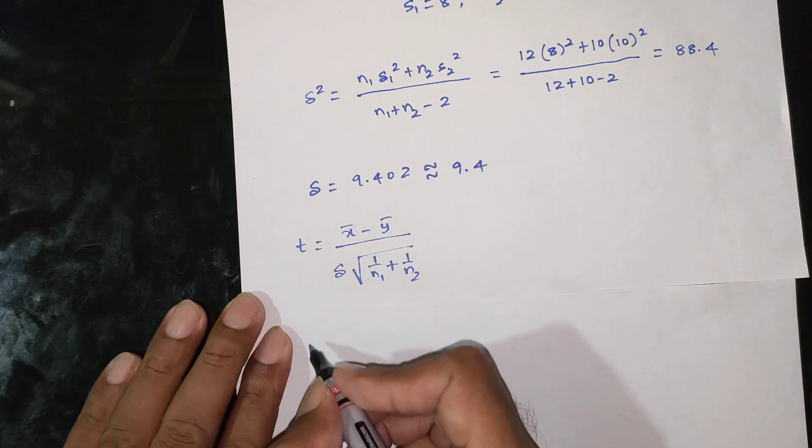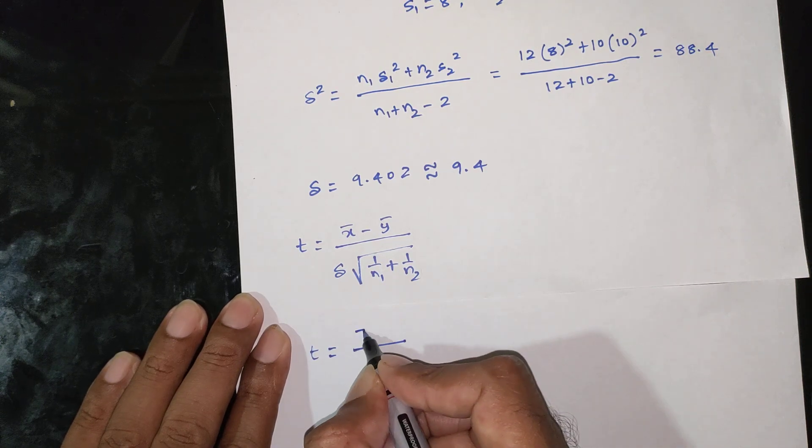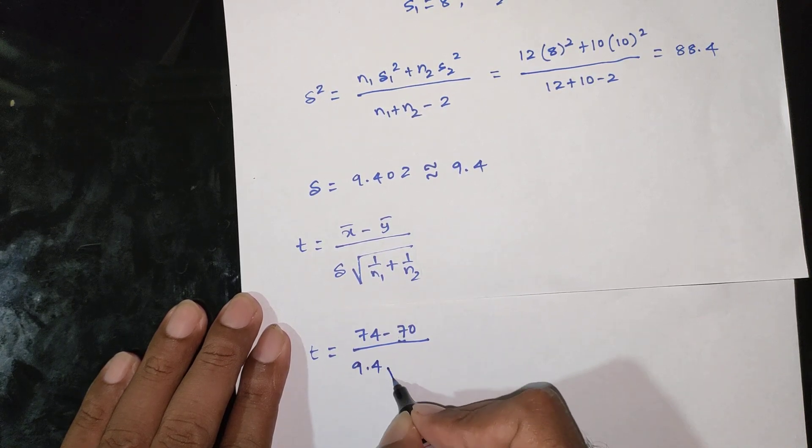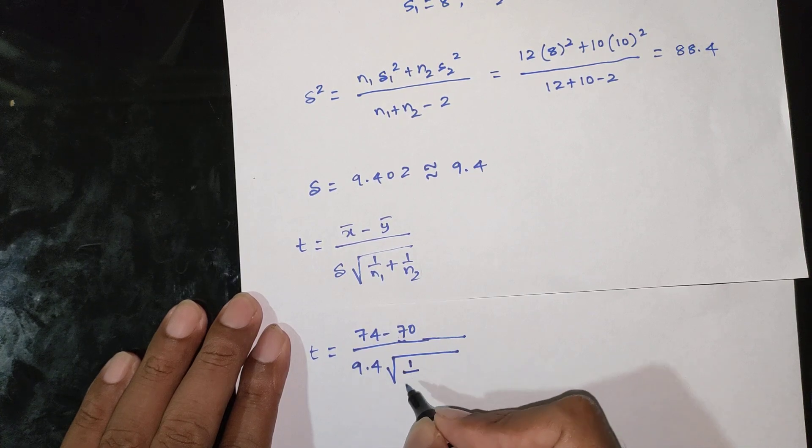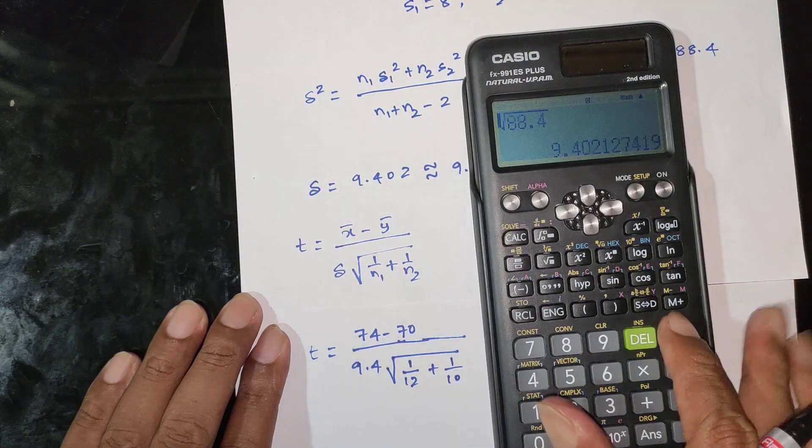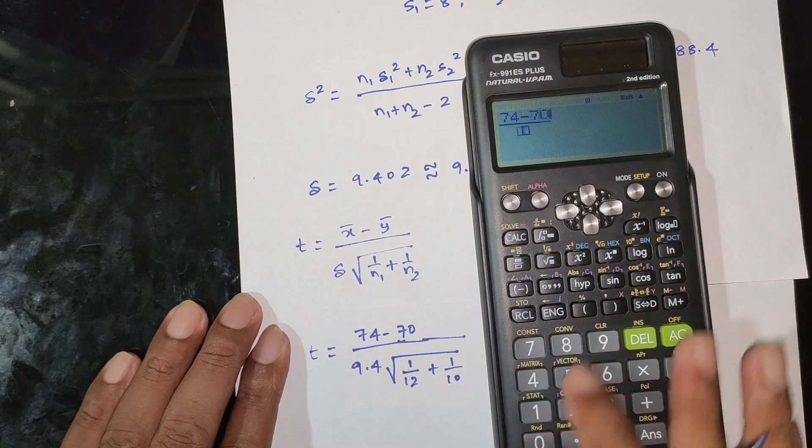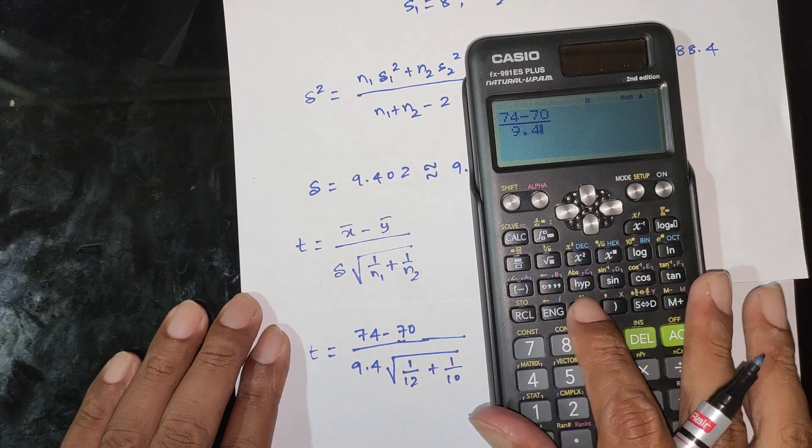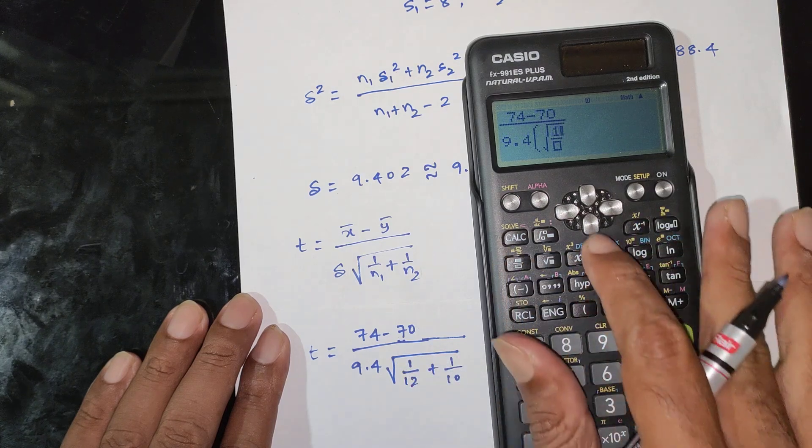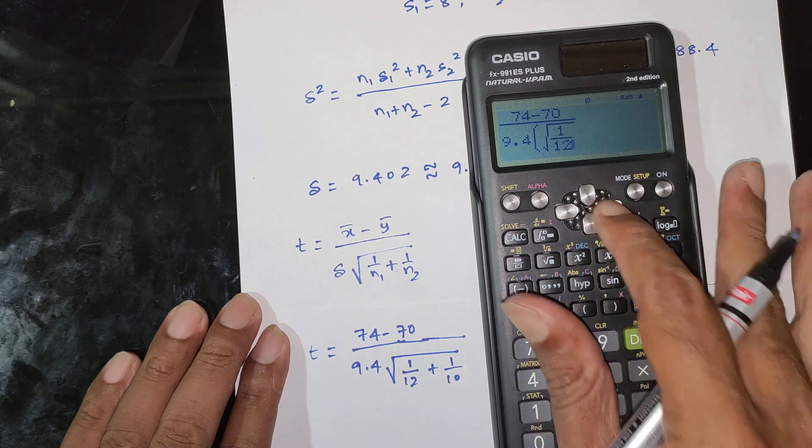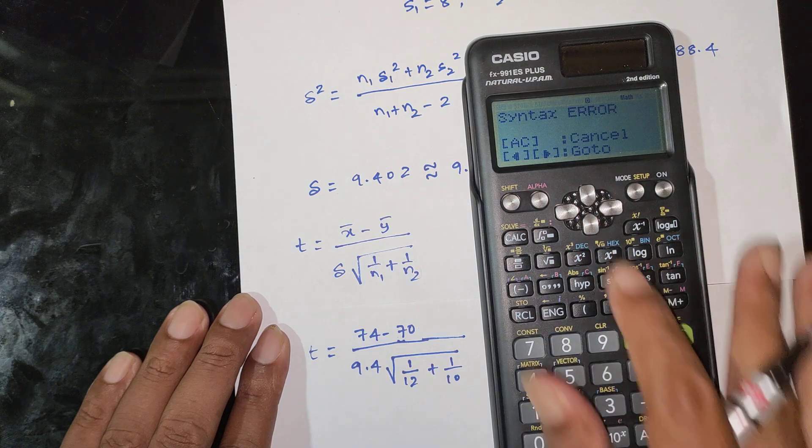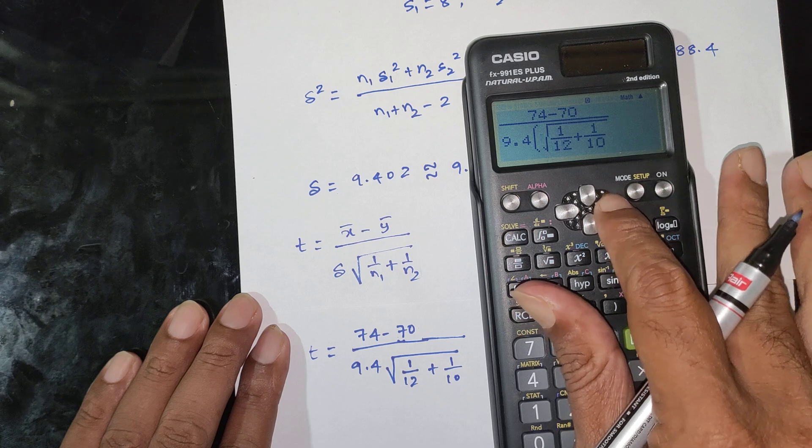t equals 74 minus 70 divided by 9.4 into root of 1 by 12 plus 1 by 10.